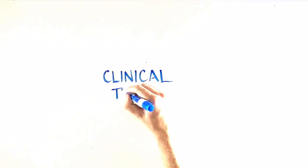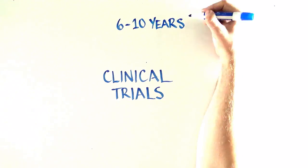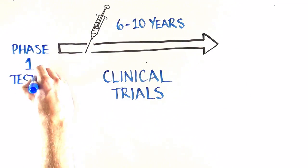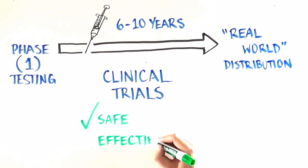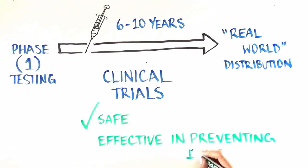In the best-case scenario, it could take 6 to 10 years for a promising vaccine to move from phase 1 testing to real-world distribution. Often, it takes longer. But clinical trials are absolutely necessary to determine that a vaccine is safe and effective in preventing new infections.